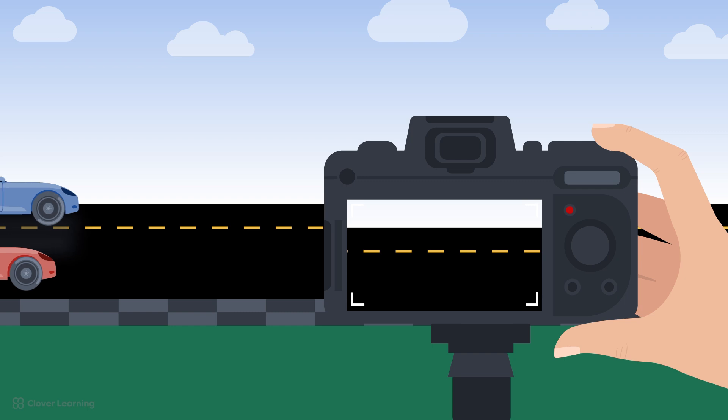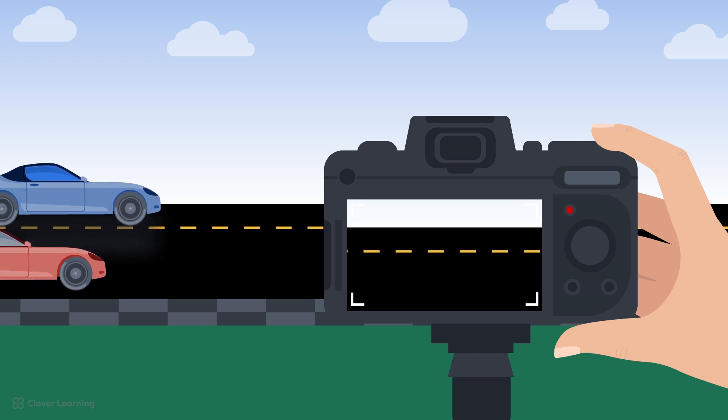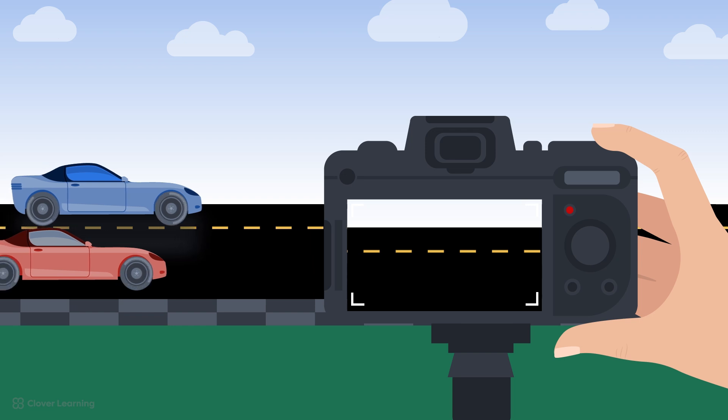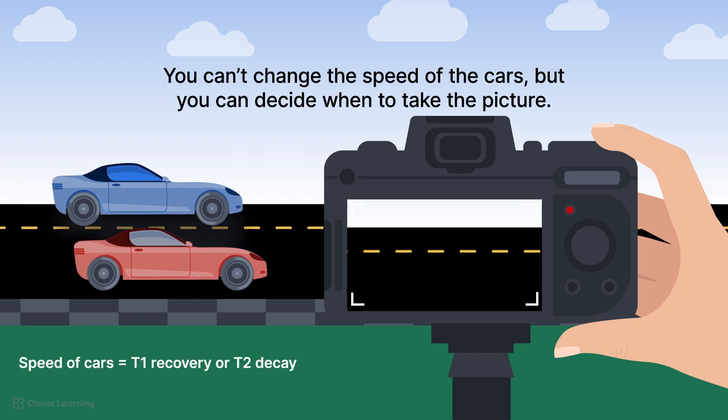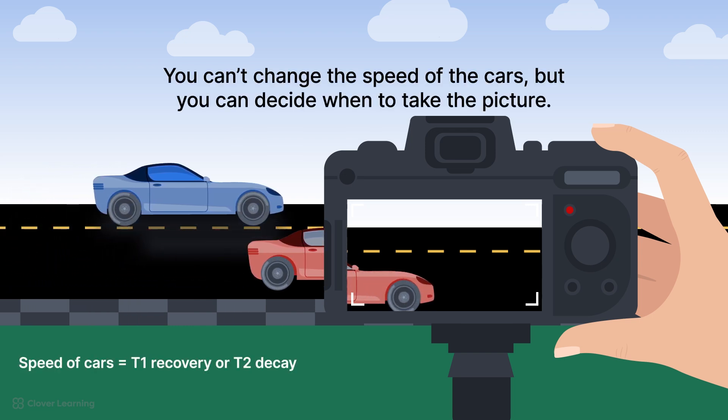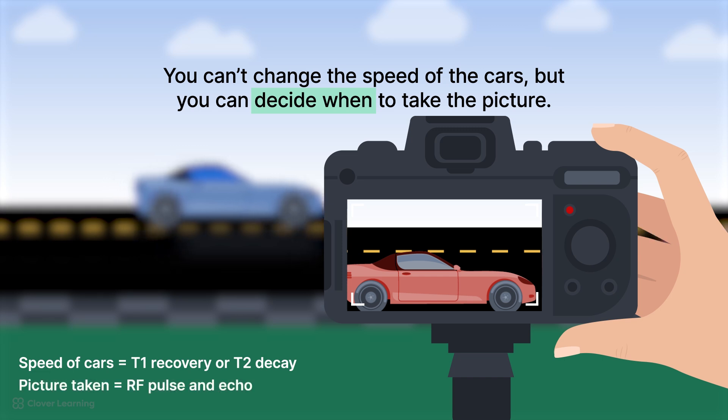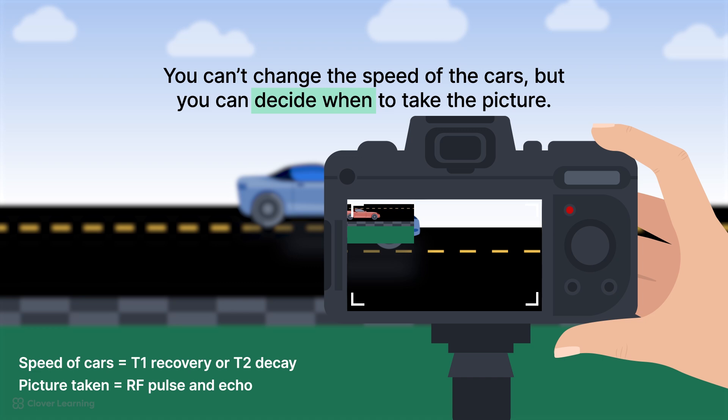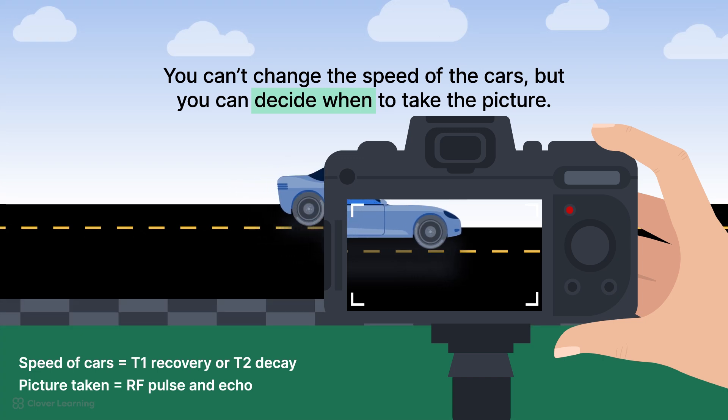Think of it like this. You're a photographer at a racetrack. One of the cars is going much faster than the other. You can't change the speed that the car is going, but you can decide when you take the picture. If you're very fast at taking the picture, you capture the fast car. If you wait longer to take the picture, you capture the slow car.